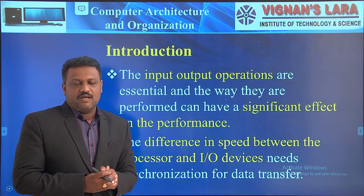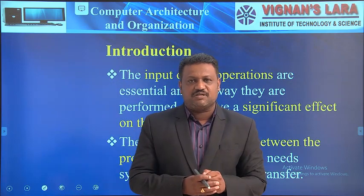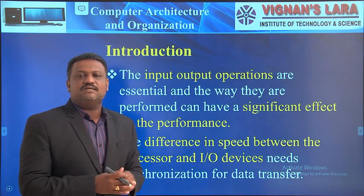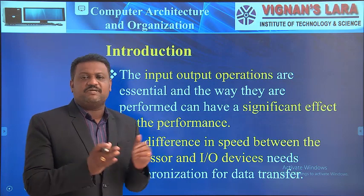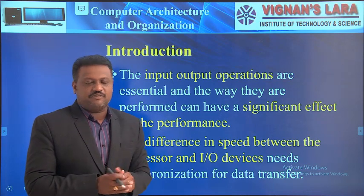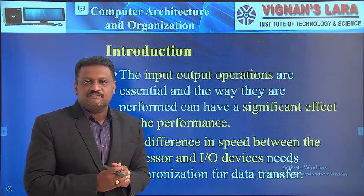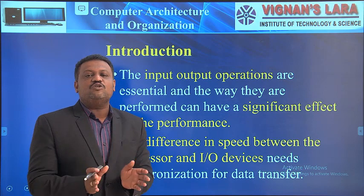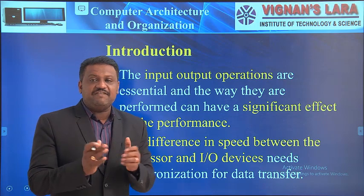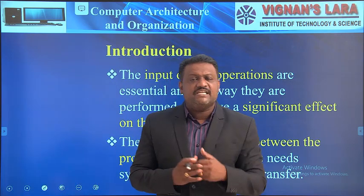The performance of the computer is essentially the speed of operation. The speed of operation depends mainly on three important things: number one, the hardware present in the system; second, the machine instructions; and third, the system software. Input and output devices are part of the hardware, so the input and output operations influence the speed of operation of the system.